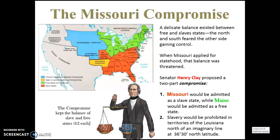Every state added to the Union faced the question of whether it could be a slave state or a free state. The first compromise was the Missouri Compromise. A delicate balance existed between free and slave states, and the north and south each feared the other side gaining control. When Missouri applied for statehood, that balance was threatened. Senator Henry Clay proposed a two-part compromise: Missouri would be admitted as a slave state while Maine would be admitted as a free state. Slavery would be prohibited in territories of the Louisiana Purchase north of an imaginary line at 36°30' north latitude. The compromise kept the balance at 12 slave and 12 free states.